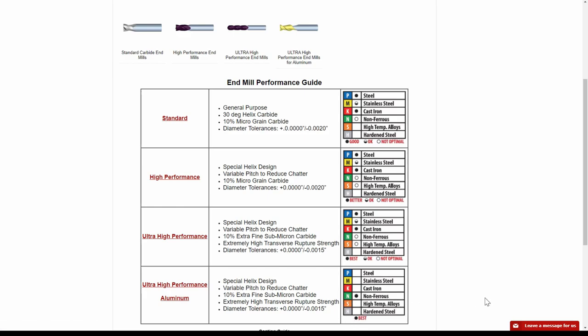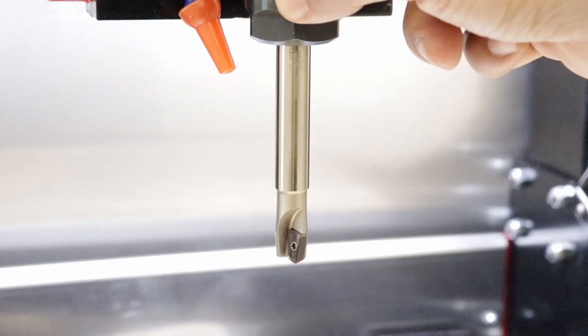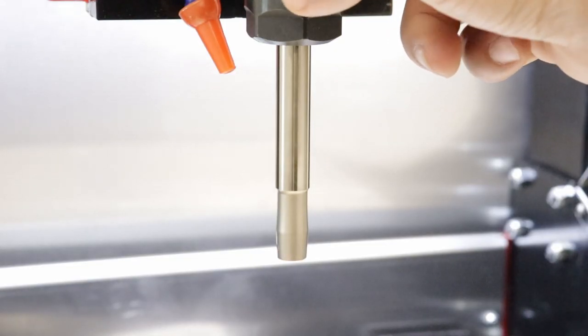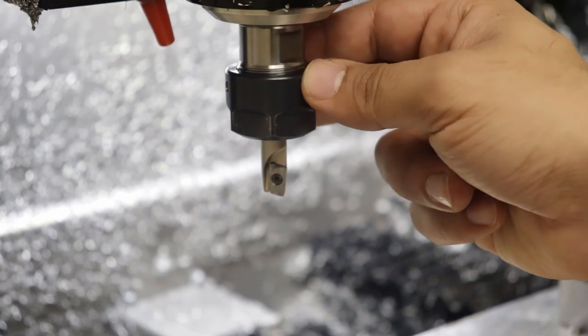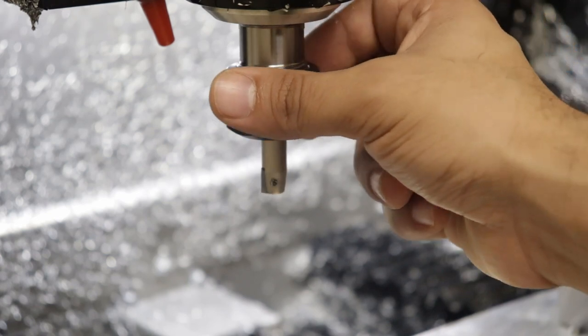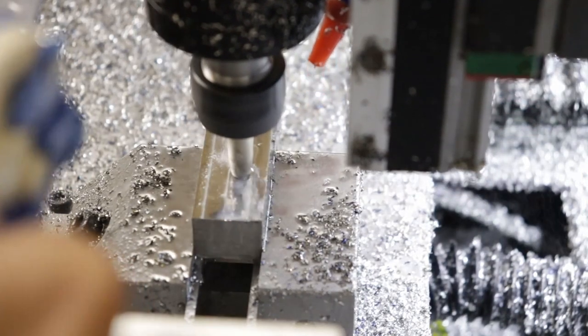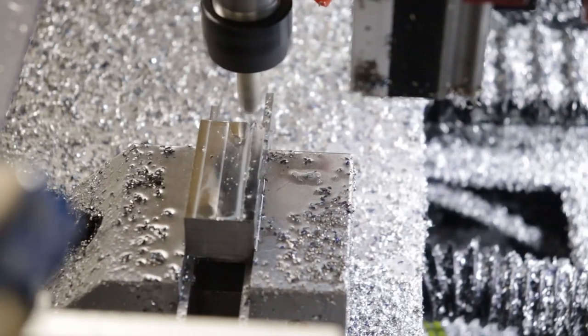Now that you know what geometry and type of endmill you need, the next thing to consider is tool diameter and length. This is fairly simple. As a rule of thumb, always use the shortest tool possible. It will be more stiff and less likely to bend or deflect in a cut. You'll get better looking finishes and the tool itself will last longer.